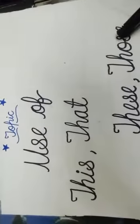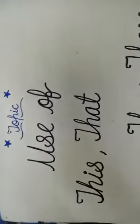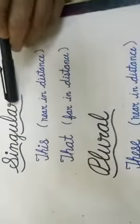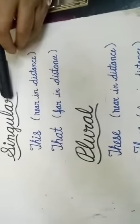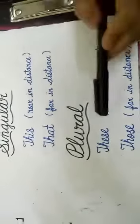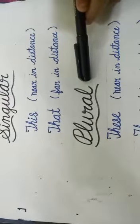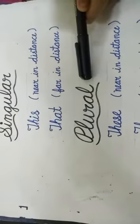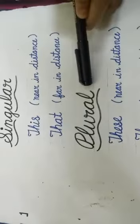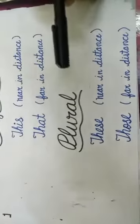To understand this, we have to keep in mind that 'this' and 'that' are the singular forms — they will be used for a single object or a single person. 'These' and 'those' are the plural forms — they will be used for more than one person or more than one object.